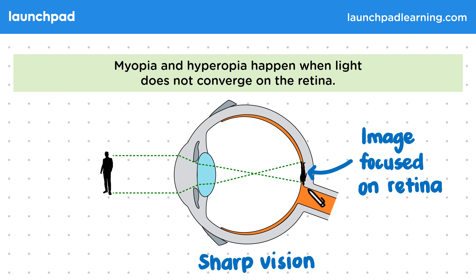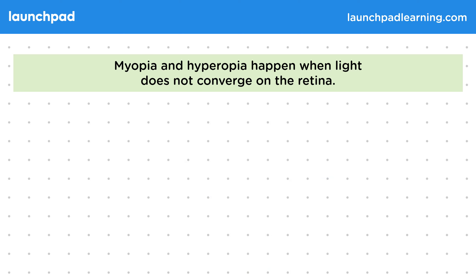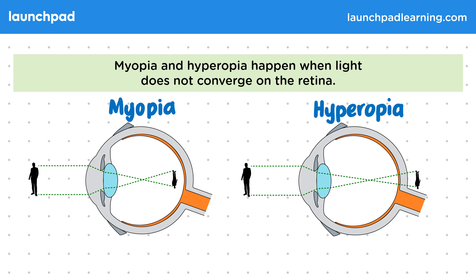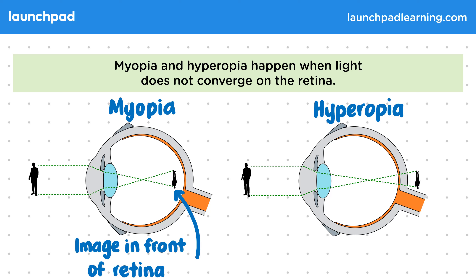So what goes wrong in near and far-sightedness? This left image shows what happens in myopia or short-sightedness, and on the right, this is what happens in hyperopia or far-sightedness. Starting with myopia, you can see that the light has been bent too much. As a result of this over-refraction, the image has formed in front of the retina rather than on it.